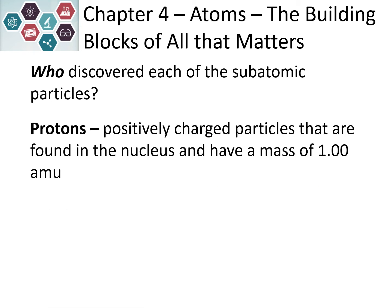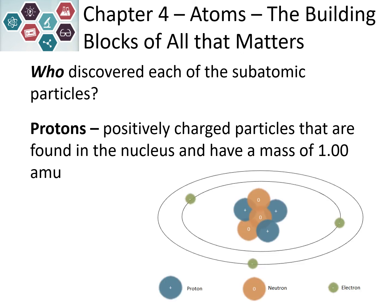The positive charges Thomson proposed were later determined to be protons — positively charged particles found in the nucleus with a mass of one atomic mass unit. They are the plus signs we see in the center of our atom.